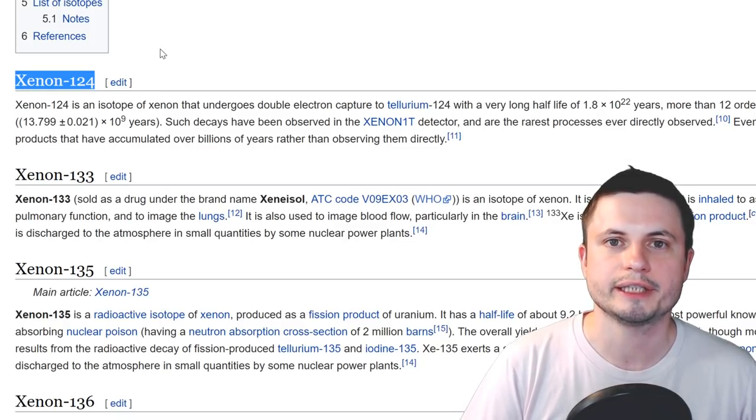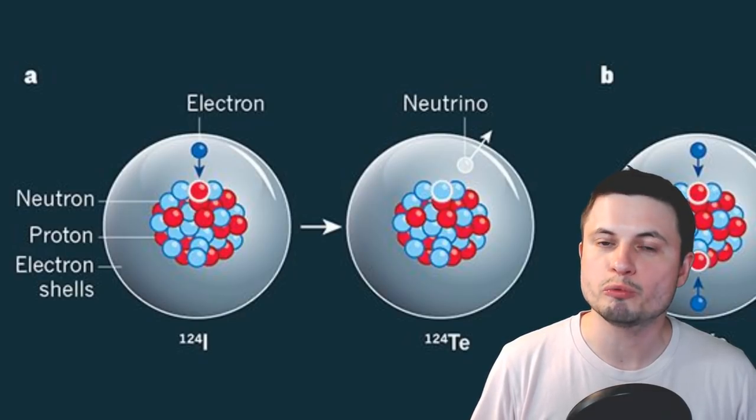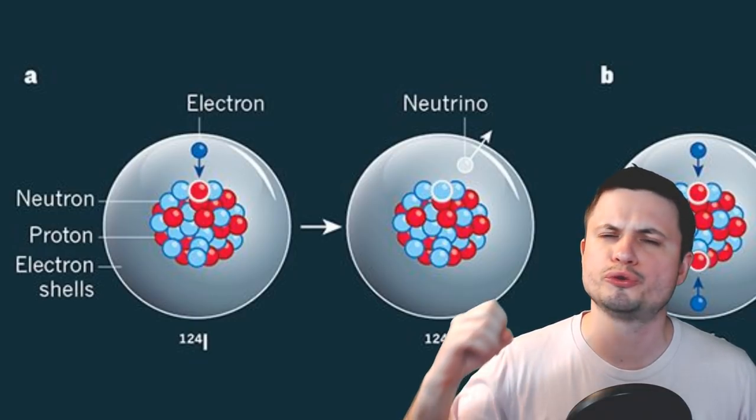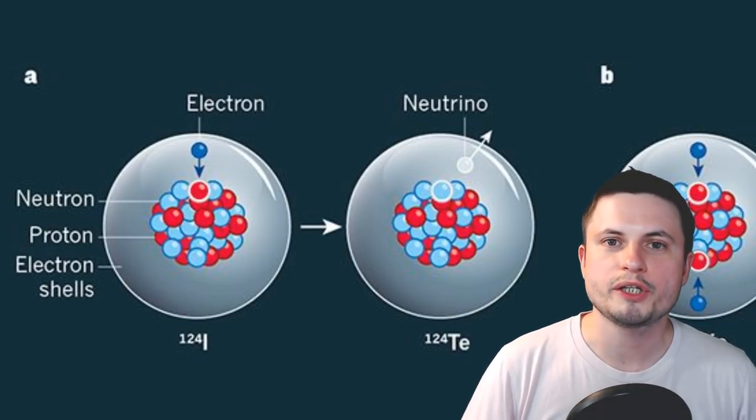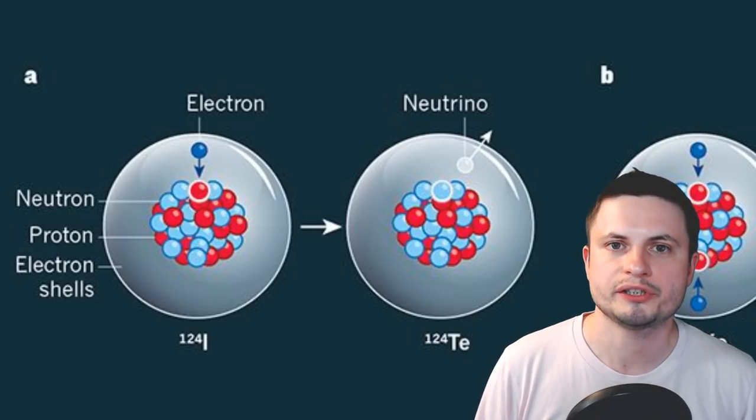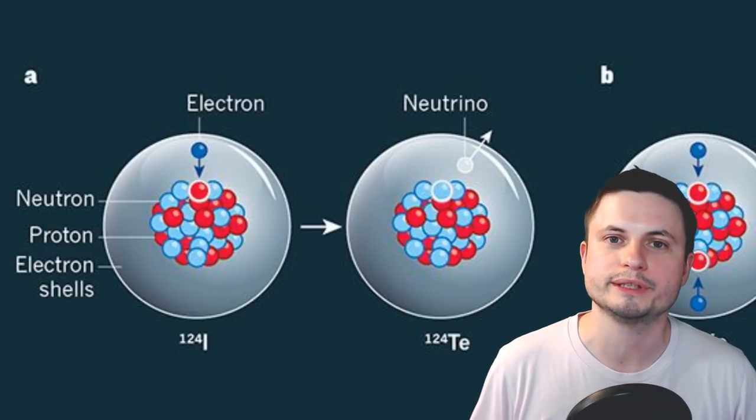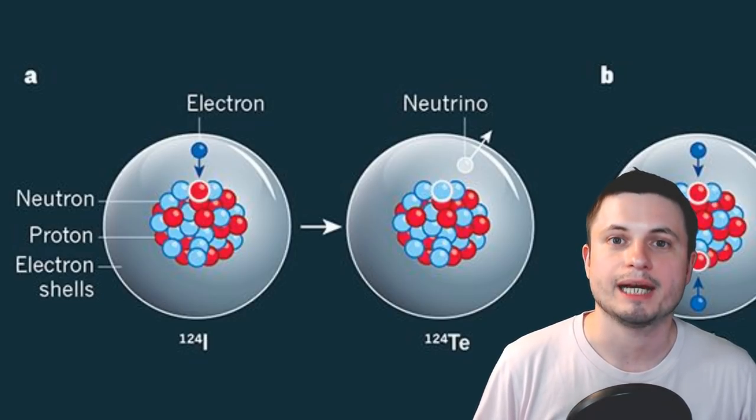This element, unofficially, had a very long but somewhat unknown half-life. In other words, we didn't really know how long it takes for it to decay, but we knew that it's super, super, super long. And so we knew that Xenon-124 changes into Tellurium-124, but we've never observed it, so we didn't really know how long it takes. Until now.